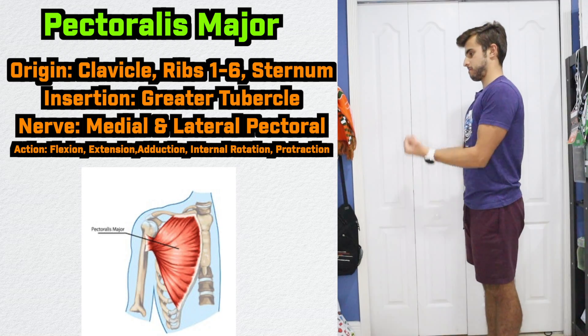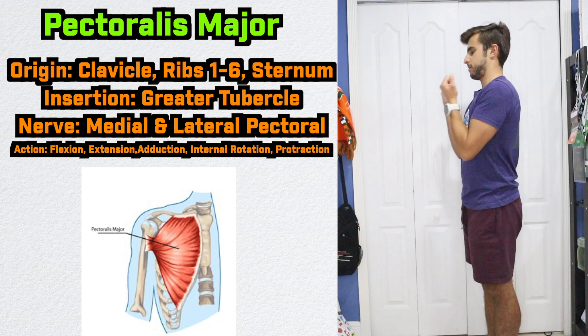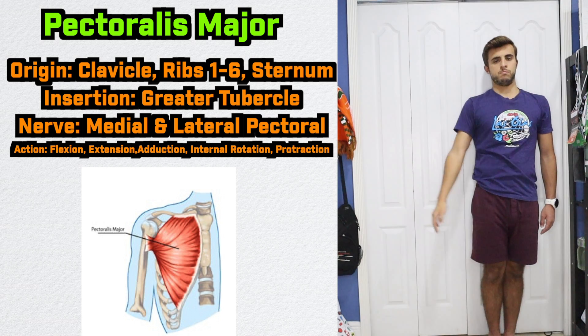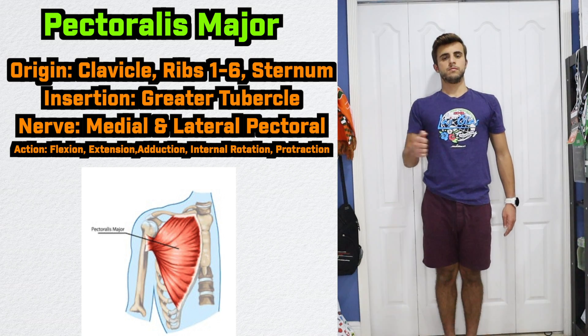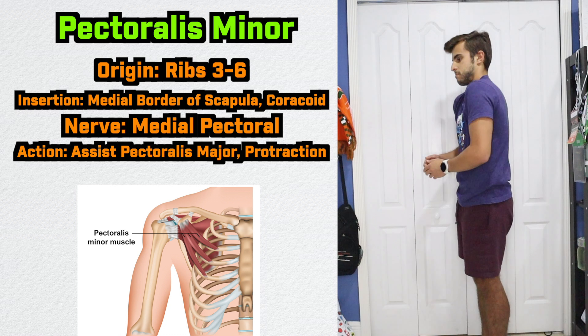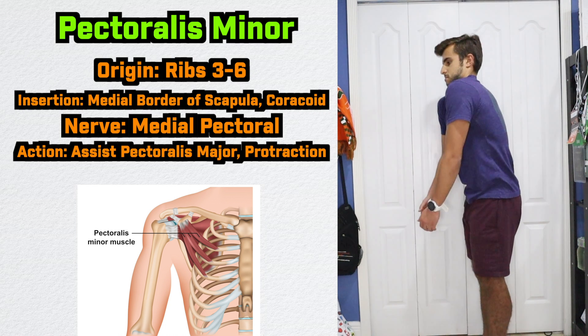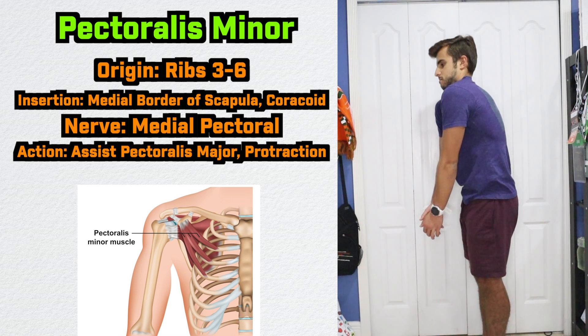Next up, we have the muscles of the chest. The largest chest muscle is the pectoralis major, which is responsible for flexion, extension, adduction, internal rotation, and protraction. Then we have the pectoralis minor, which mainly assists the pectoralis major and performs protraction. So we have two muscle groups reviewed — we are halfway there.